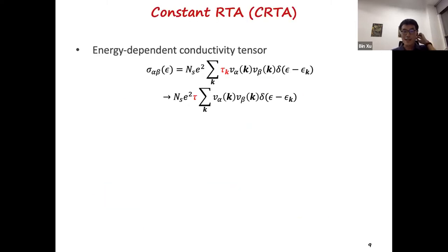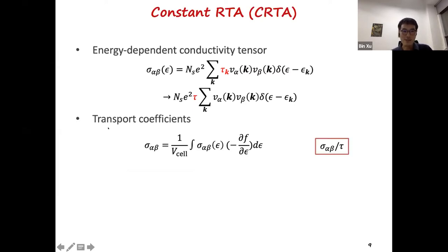If we use the relaxation time approximation, the Boltzmann equation is very simple to solve. We can define an energy-dependent conductivity tensor, sigma epsilon, which is basically the density of states weighted by tau k as well as the band velocities. If we ignore the k-dependence and treat it as a constant, we can take the tau outside the summation. With that, we can further derive the transport coefficients, such as the conductivity tensor, which is the energy integral of the sigma epsilon, multiplied by the energy derivative of the Fermi-Dirac distribution function. However, with the constant tau k, which is an unknown parameter, so at the end, you can't really fully predict the sigma, but only sigma over tau.